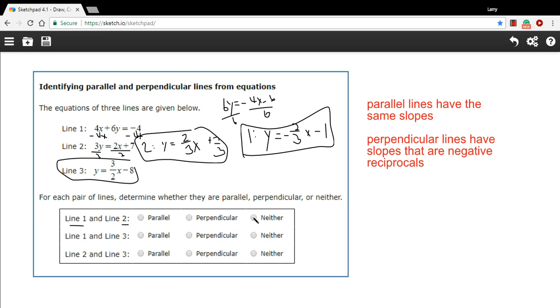So these are neither. They're not parallel, and they're not perpendicular. All right, let's compare line 1 and line 3 now. So line 1 has a negative 2 thirds. Line 3 has a positive 3 halves. So they're not the same slope, so they're not parallel.